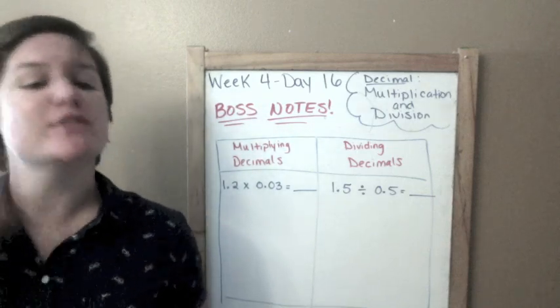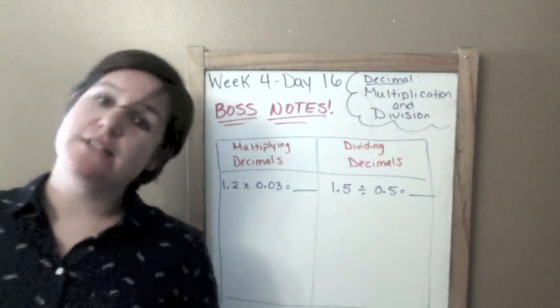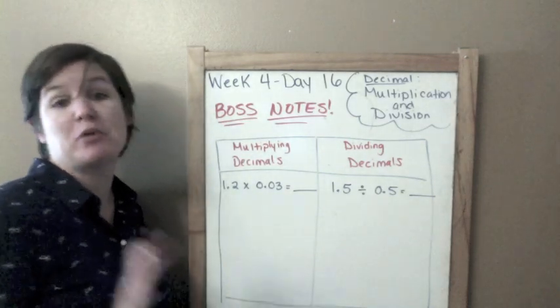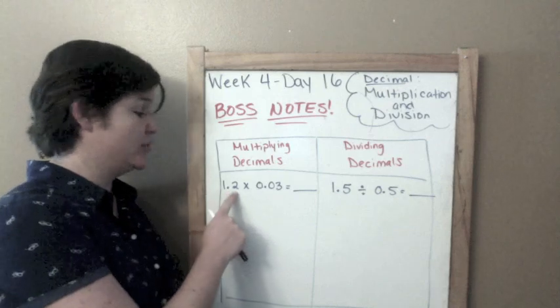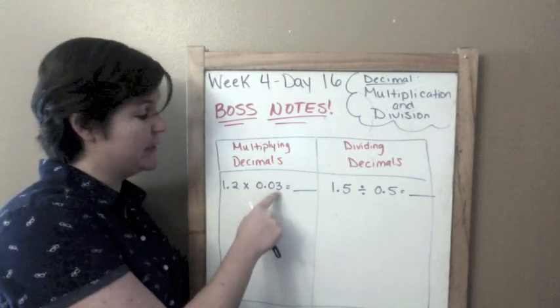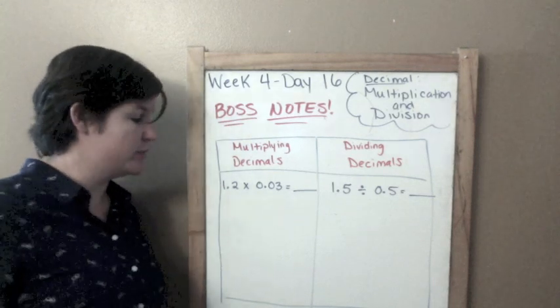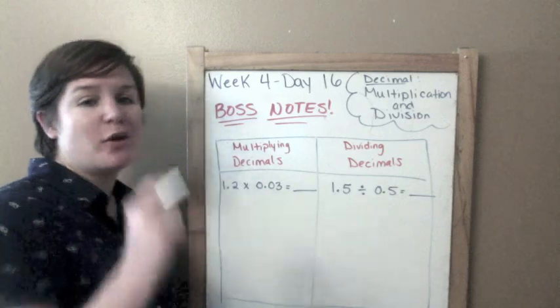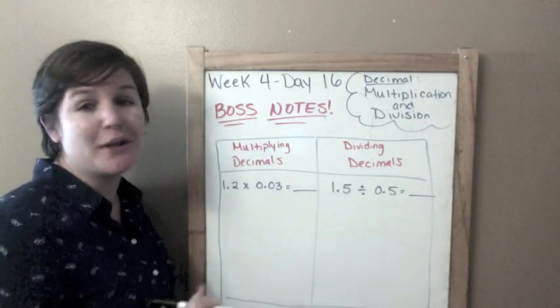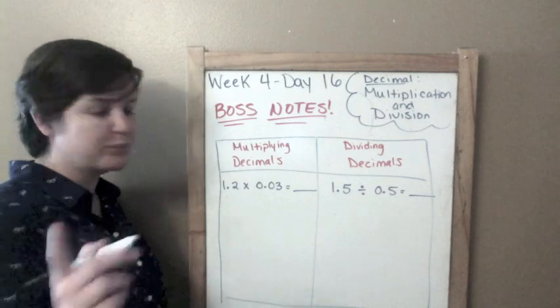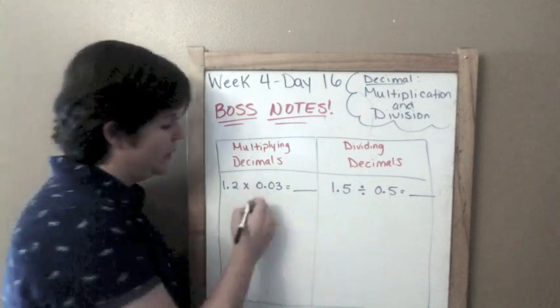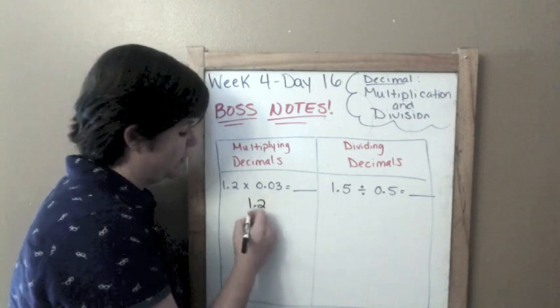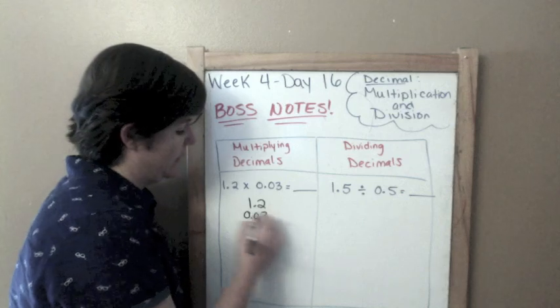Alright, so here are your boss notes for multiplying and dividing decimals today. So in the first one we've got 1.2, I'm sorry, let me read that properly. 1 and 2 tenths times 3 hundredths because that 3 is in the hundredths place. Now don't freak over multiplying decimals because if you know how to multiply multi-digit numbers, you're going to be fine. Watch me. When you're multiplying decimals, you forget, you imagine that the decimal is not even there. Okay?